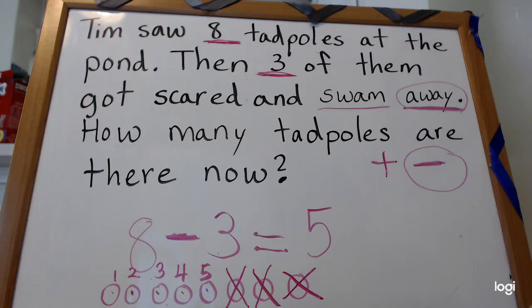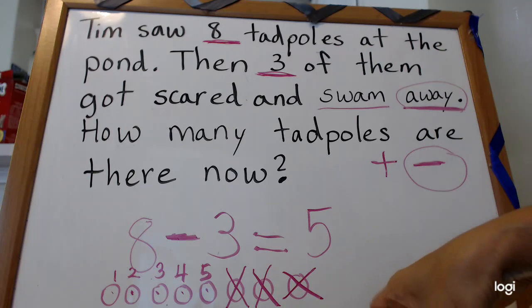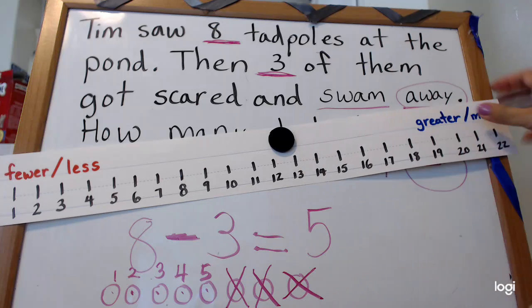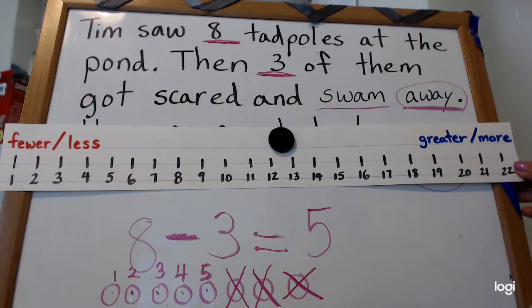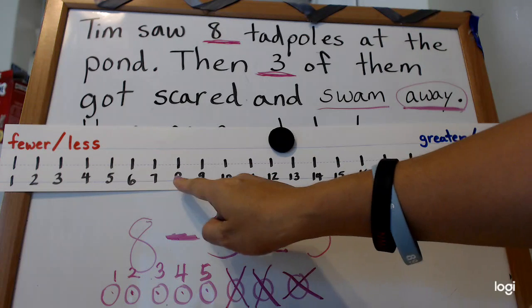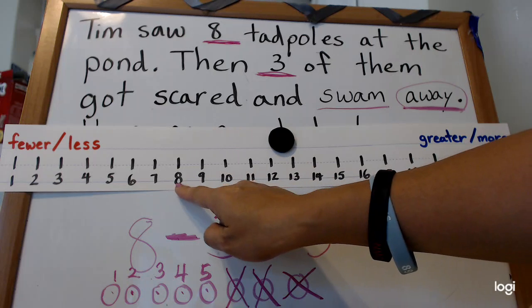And we can also use our number line. We haven't been doing this a lot before, but now I'm going to show you so that way you'll be ready when we get back to school. So I'm going to put the number line up here. Hopefully you can see it. Okay, can you see it? Good, good. Okay, so first we find the number eight, sorry guys, the number eight.